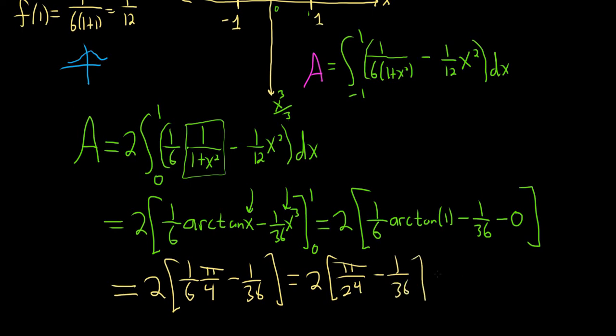I think at this point we could. Well, I'll distribute the 2. So pi over 12. Right? 2 over 24 is 12. Minus 1 over 18. Let's see what the decimal form is for this.